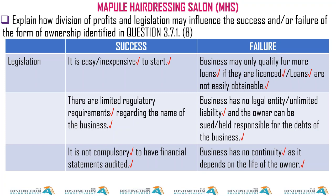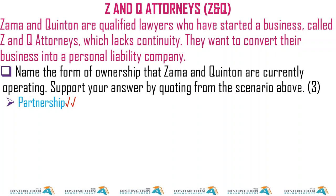Moving on to legislation for a sole trader. Success: it is easy and inexpensive to start. There are limited regulatory requirements regarding the name of the business. It is not compulsory to have financial statements audited. Failure: the business may only qualify for limited loans. The business has no legal entity, meaning liability is unlimited — the owner can be sued and held responsible for the debts of the business. There's no continuity — the business has no continuity as it depends on the life of the owner.